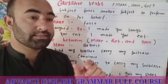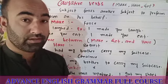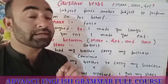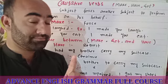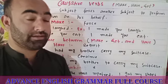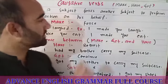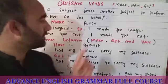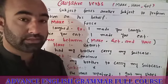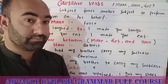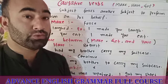When one person causes another person to do something, we use the causative verbs. The causative verb is used to express the idea that one person causes another person to do something. The first causative verb is 'make'. The verb make is used to force another person to do something.